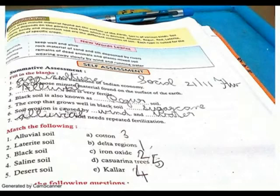Soil erosion is caused by wind, water and rainfall. Soil needs repeated fertilization.